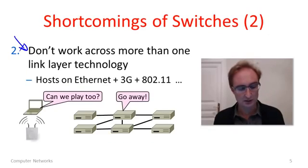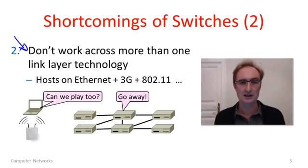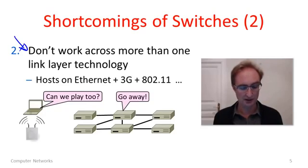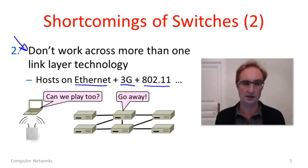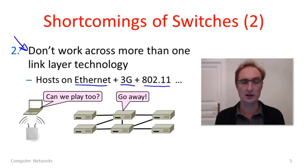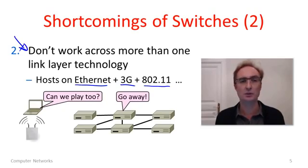A second shortcoming is that the switch approach we've seen doesn't work across more than one kind of link layer. It's a link layer approach, so it's designed for a particular link layer. We've already seen different kinds of links: Ethernet inside wired enterprises, 802.11 inside many houses, and 3G for cellular mobile connectivity. We would like to be able to network them all together and send packets from, say, an 802.11 host through to a host on a wired Ethernet. But the switching approach doesn't really take this into account — it isn't equipped to join these different kinds of link layer technologies together.